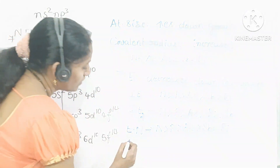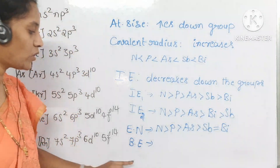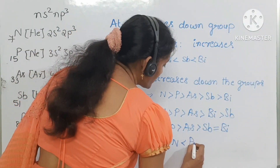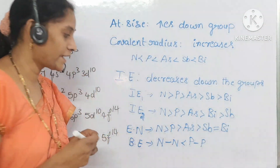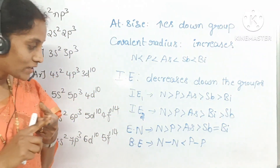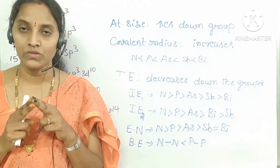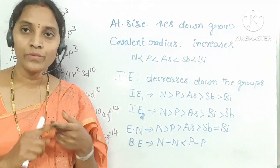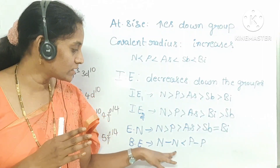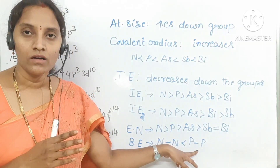Regarding bond energy: nitrogen has less bond energy than phosphorus. This is because nitrogen exists as a diatomic molecule with a triple bond between two atoms, but the non-bonded lone pair electrons create more repulsions. That is why nitrogen has less bond energy compared to phosphorus, which is tetraatomic.